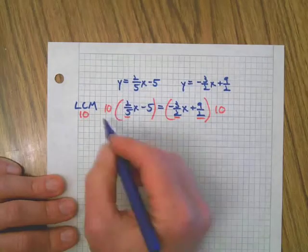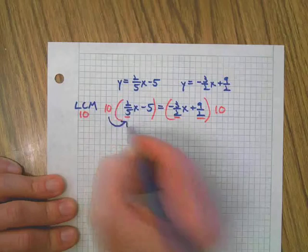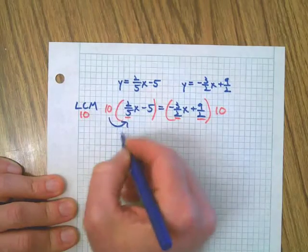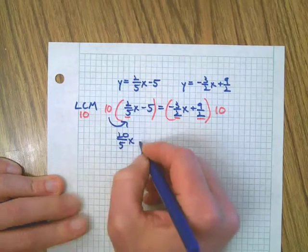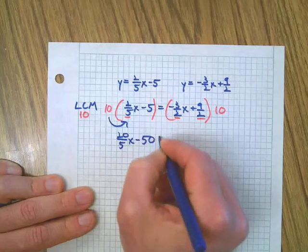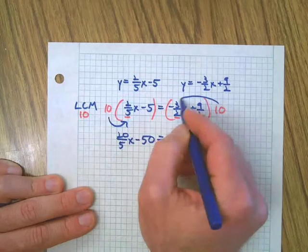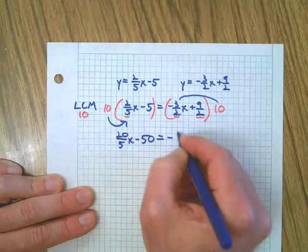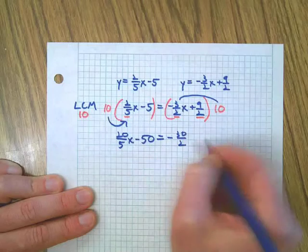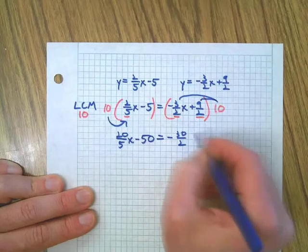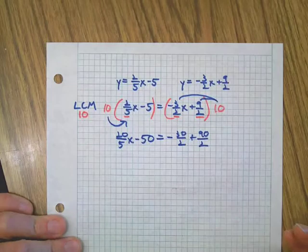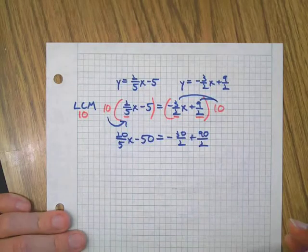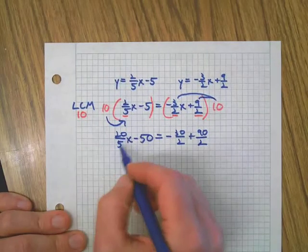So to show that we're going to distribute that 10 to everything across this entire equation. Little parentheses, little 10 out there, and make sure we distribute. So 10 times 2 over 5, minus 10 times 5, equals negative 10 times 3 which is 30 over 2, and 10 times 9 which is 90. I like 10 - it's easy to multiply.